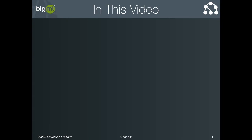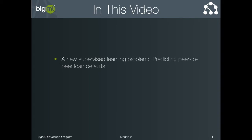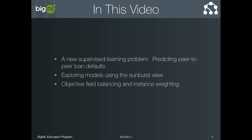Welcome back to the BigML tutorial series. In this video, we'll be digging deeper into a few of the configuration options BigML offers for constructing a supervised model. To start, we'll introduce another supervised learning problem based on a dataset gathered from a peer-to-peer lending website. We'll then see how the one-click model might not be very useful and how we can improve its usefulness by balancing the objective field. Finally, we'll talk about missing data and how to configure your model to leverage it.